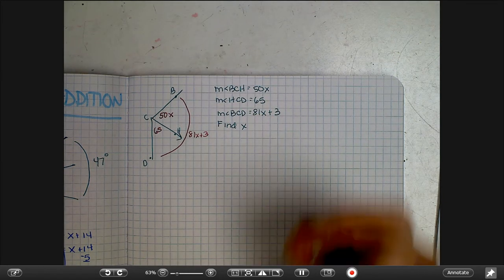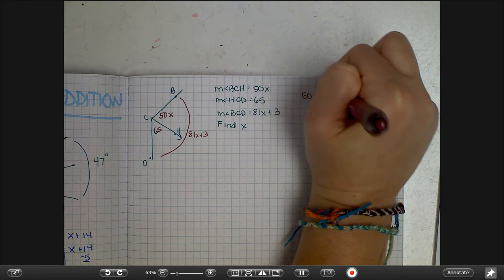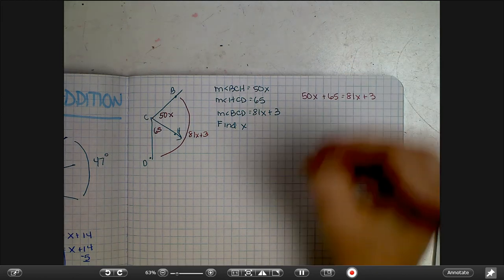Well, we know that piece plus piece equals whole. So 50x plus 65 is equal to 81x plus 3, and then just solve that.